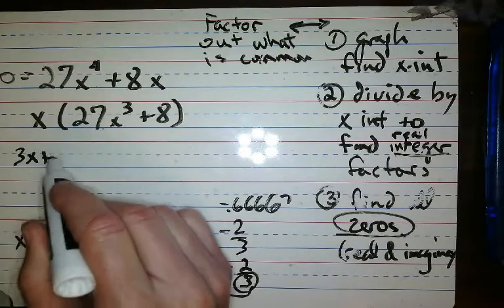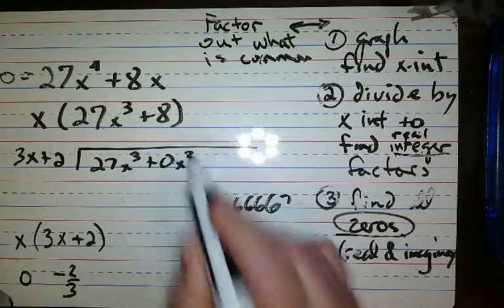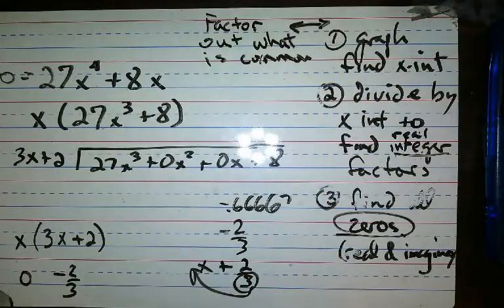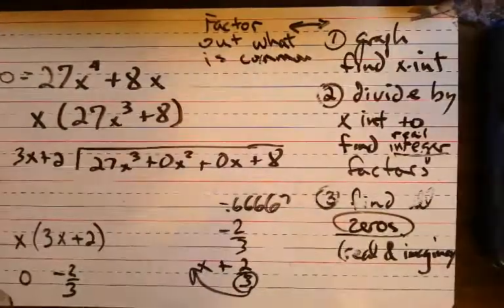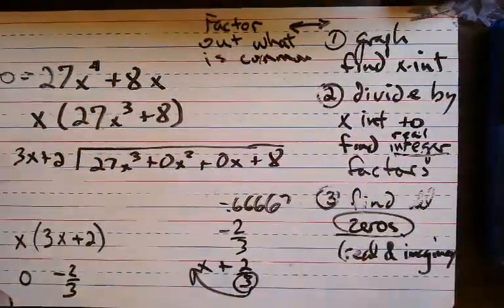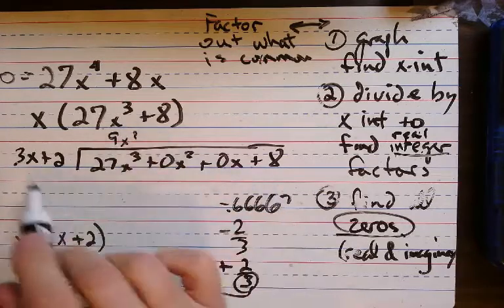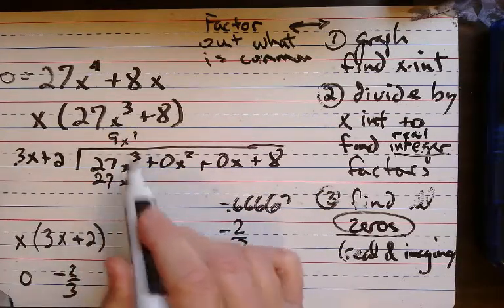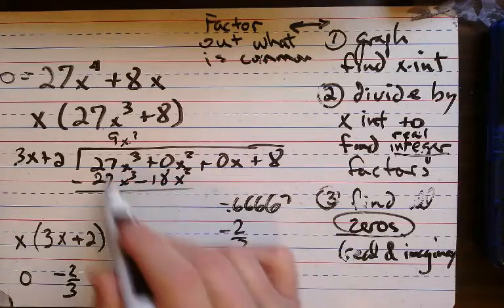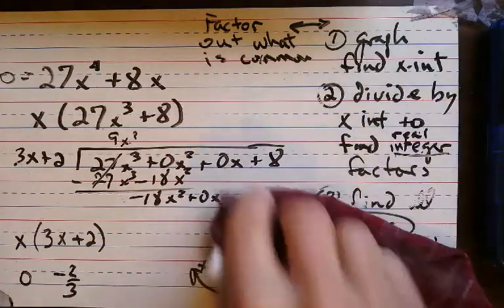So I'm going to do 3x plus 2 into 27x cubed. Now there's not any x-squareds and there's not any x's, and there's a number at the end. So 3 times 9 — that would be 9x squared — yes, 9x squared gives 27. 9 times that would be 18. Subtract, subtract. That goes away. Negative 18, plus zero x's.